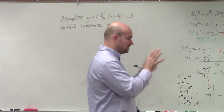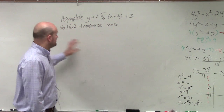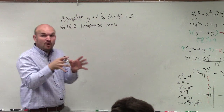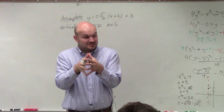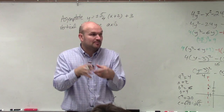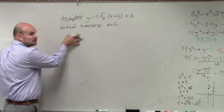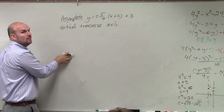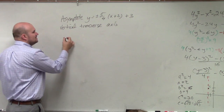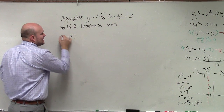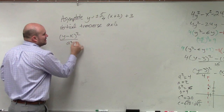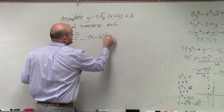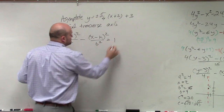So first of all, there's a couple things I want you guys to remember. First thing: vertical transverse axis. You guys should know off the bat, if you have a vertical transverse axis, what exactly is the equation of a hyperbola? Remember, vertical transverse axis means my a has to be under my y. So the equation I'm going to use is: y minus k squared over a squared, minus x minus h squared over b squared, equals 1.